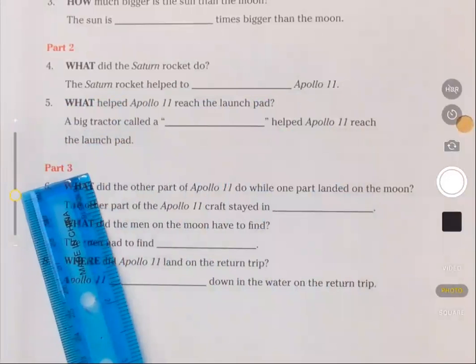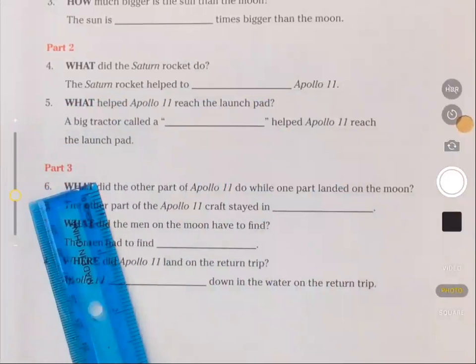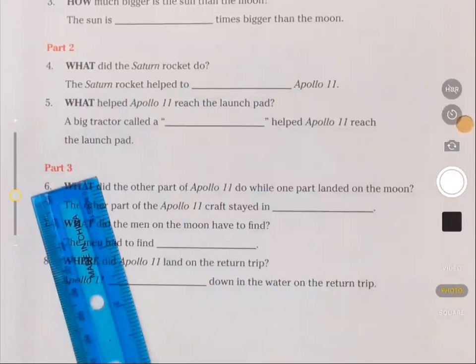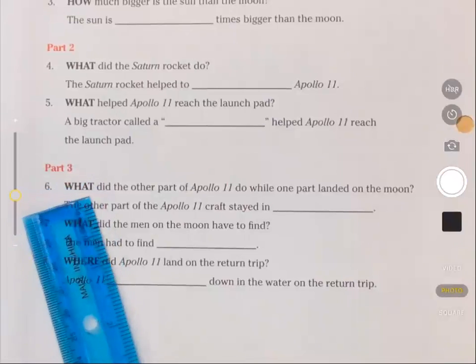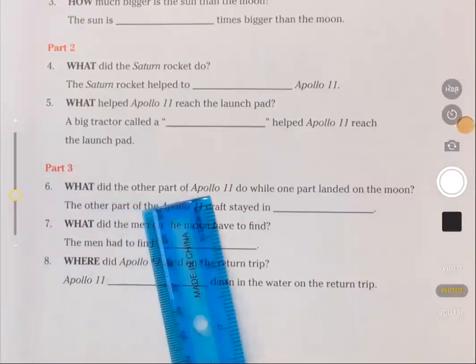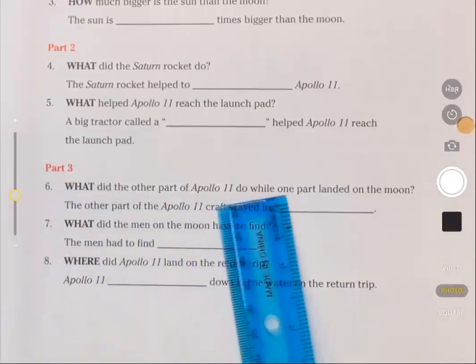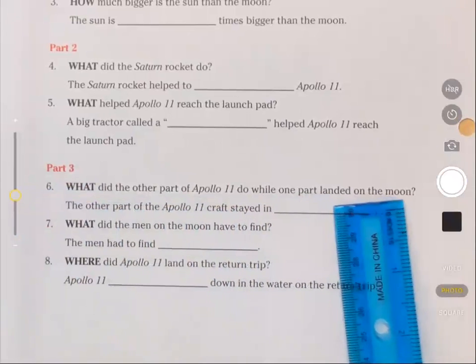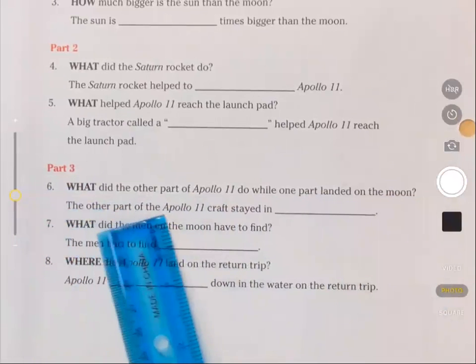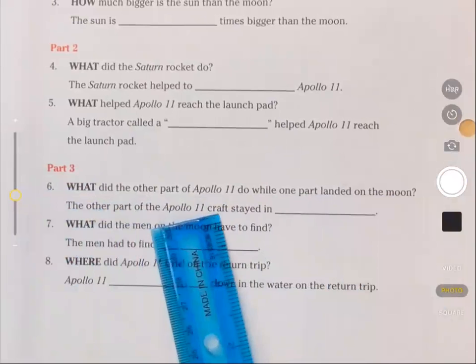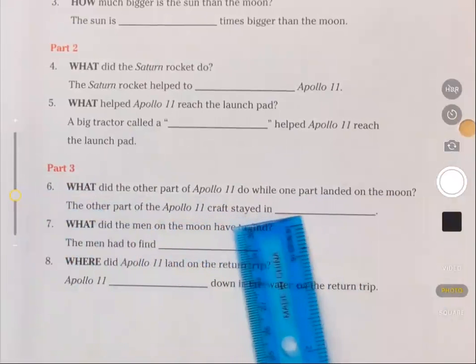Part three. These are the questions for part three of the story. Question six: What did the other part of Apollo 11 do while one part landed on the moon? The other part of the Apollo 11 craft stayed in blank.